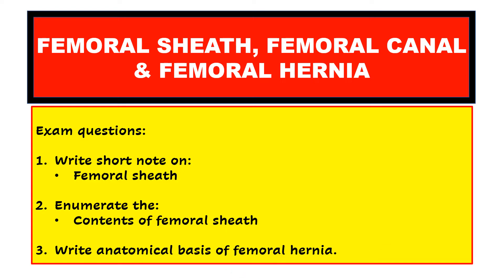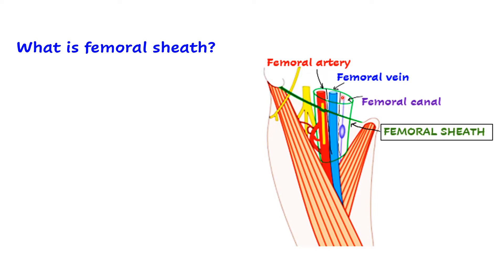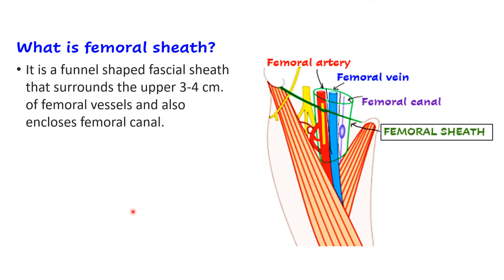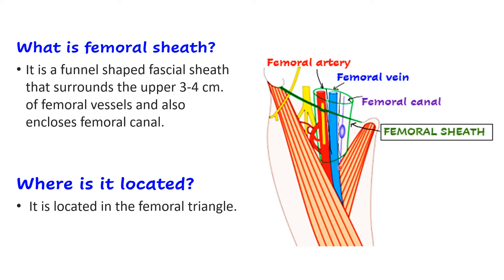What is femoral sheath? In this diagram you can see a green colored funnel-shaped sheath formed by fascia — broader above and narrow below. It is enclosing the femoral artery, the femoral vein, and also a compartment that looks almost empty with a lymph node, known as the femoral canal. Femoral sheath is defined as a funnel-shaped fascial sheath that surrounds the upper 3-4 centimeters of the femoral vessels and also encloses the femoral canal.